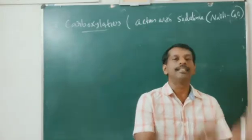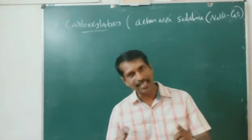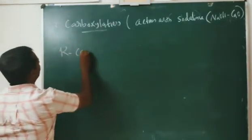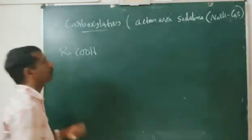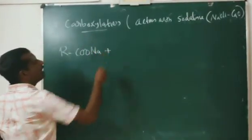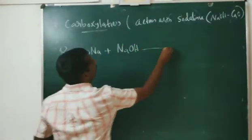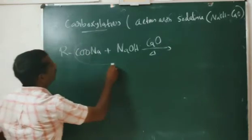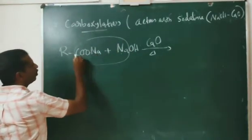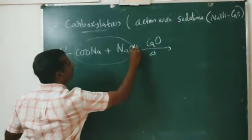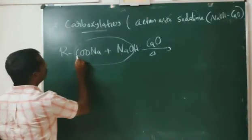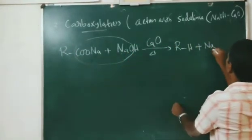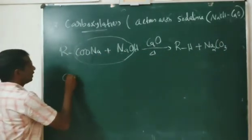The sodium salt of a monocarboxylic acid will give an alkane containing one carbon less than the starting carboxylic acid. In general: RCOONa, when treated with soda lime (NaOH and CaO) and heated, Na₂CO₃ is eliminated and we get RH plus Na₂CO₃.